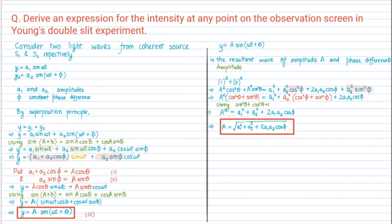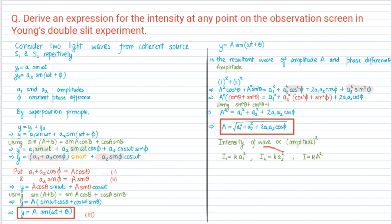Now, the intensity of light is directly proportional to the square of the amplitude. Therefore I1 = k·a1², where k is the proportionality constant. Similarly I2 = k·a2², and the resultant intensity I = k·A², where A is the amplitude of the resultant wave.